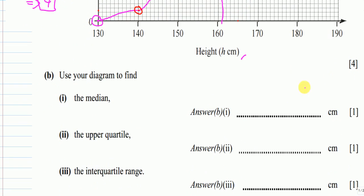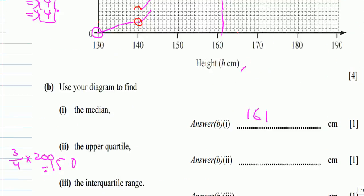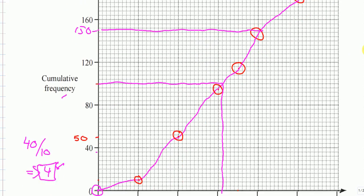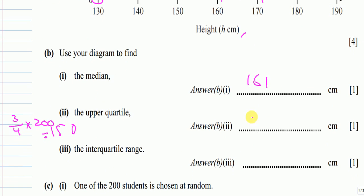Part (b)(ii) asks for the upper quartile, which is three-quarters of 200, giving 150. Drawing the line at cumulative frequency 150 — counting up: 124, 128, 132, 136, 140, 144, 148, 152 — placing the line at 150 and reading across to the curve, then down gives approximately 171 cm.